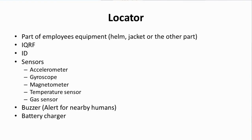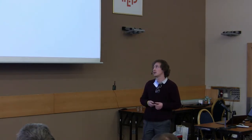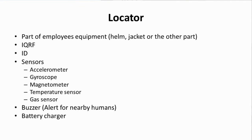The locator. It's a part of employee equipment, such as helm, jacket, or the other part. There is built-in IQRF T module 2. Each locator has a specific ID. The locator contains a couple of sensors.